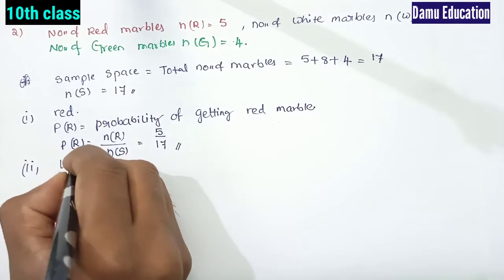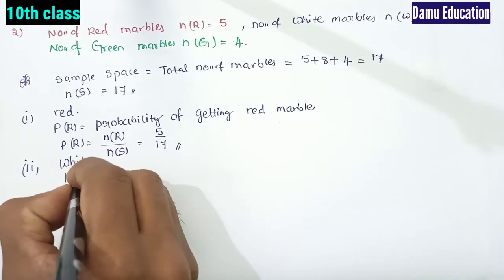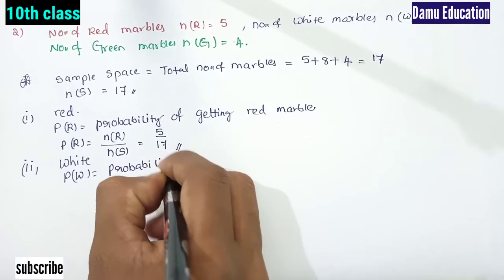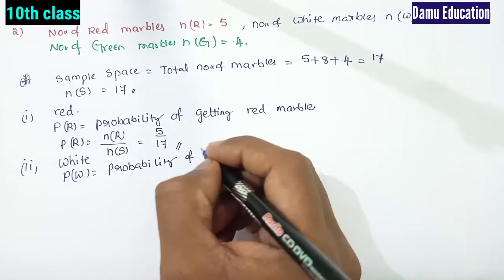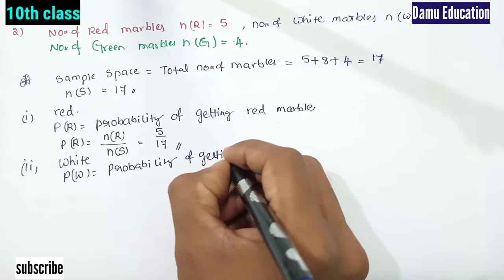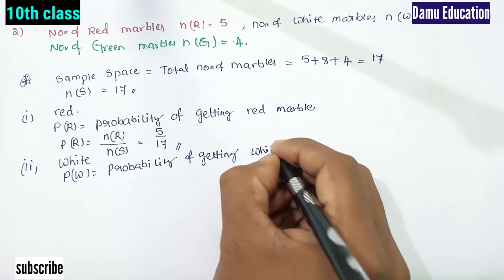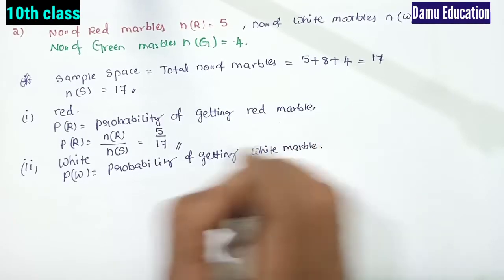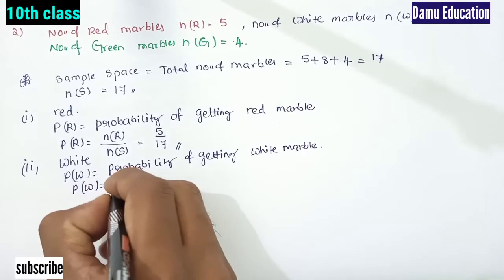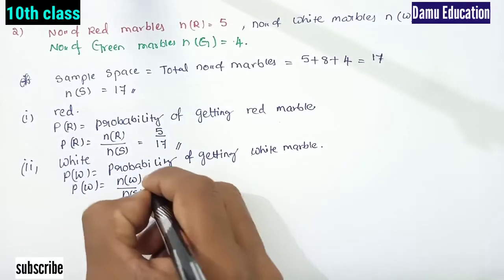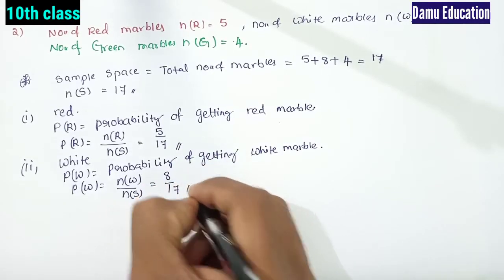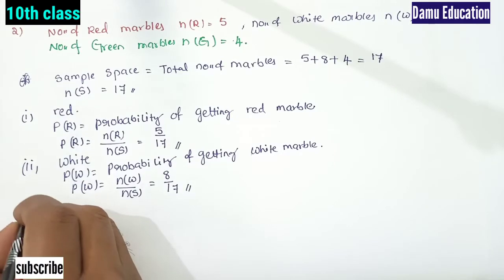Getting white marble. P of W — probability of getting white marble from the random experiment. P of W will be equal to n of W by n of S. Number of white marbles is 8 by 17, so P of W = 8/17.